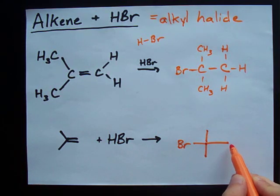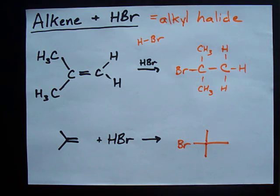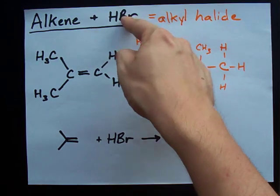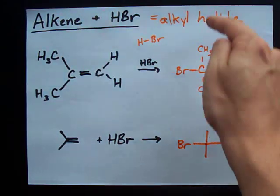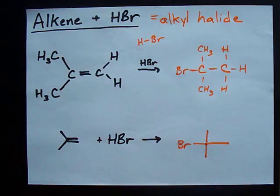This carbon gets an H, but remember you don't show that in stick figures. And that's it. That's how you add a hydrogen halide across an alkene to make an alkyl halide. Best of luck.